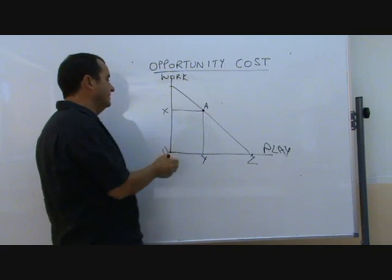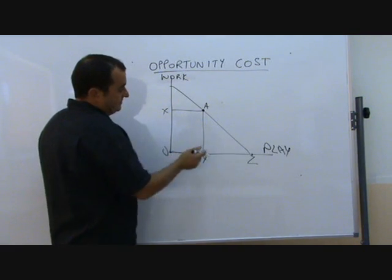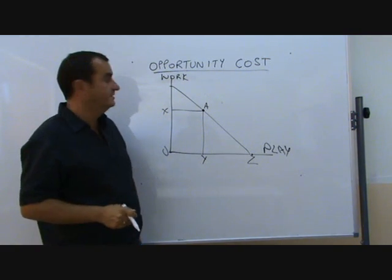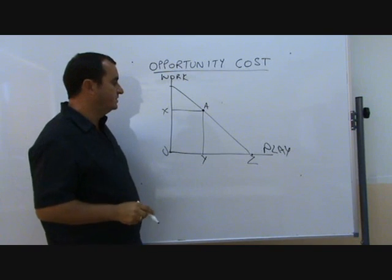If they decide to increase their work, they're going to have to sacrifice more and more of their play. That's opportunity cost.